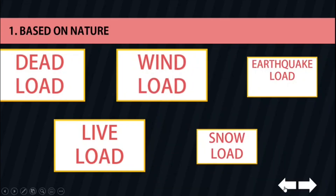When structures block the flow of wind, the wind's kinetic energy is converted into potential energy of pressure, which causes a wind loading. The effect of wind on a structure depends on the density and velocity of the air, the angle of incidence of the wind, the shape and stiffness of the structure, and the roughness of its surface. For design purposes, wind loadings can be treated using either a static or a dynamic approach.